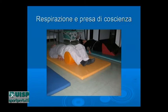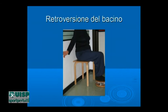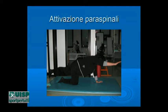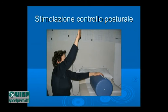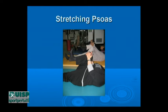Nei casi meno seri, anche interventi in gruppo di ginnastica tipo back school hanno mostrato un'ottima efficacia. Vediamo velocemente delle immagini: esercizi di respirazione, esercizi di anteroversione del bacino, esercizi di tonificazione della muscolatura paraspinale — in particolare il multifido — esercizi che stimolano la propriocezione e il controllo posturale, attivazione dei glutei e del multifido, esercizi di stretching spesso per una struttura molto contratta.